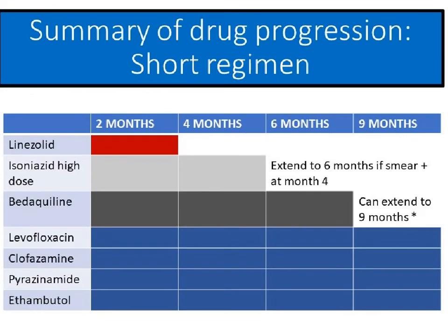This slide gives a nice visual picture of how these drugs get stopped in sequence. Linezolid completes at two months, INH at four months, bedaquiline at six months — unless it needs to be extended, for example for late converters — and then levofloxacin, clofazimine, PZA, and ethambutol are given throughout.